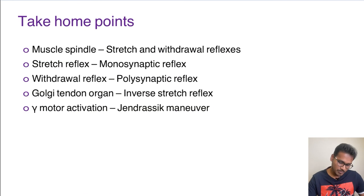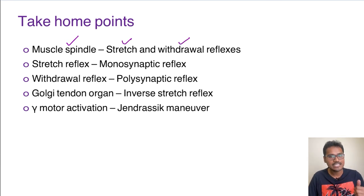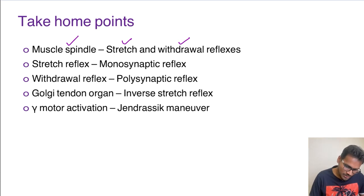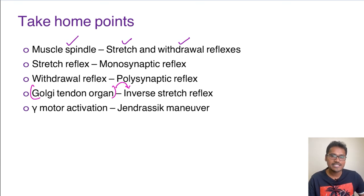Coming to the take-home points — the muscle spindle is responsible for both the stretch reflex and the withdrawal reflex. Stretch reflex is an example of a monosynaptic reflex, whereas withdrawal reflex is an example of a polysynaptic reflex. The Golgi tendon organ is responsible for the inverse stretch reflex. The gamma motor neuron discharge forms the basis of the Jendrassik maneuver. Please revise this topic — thank you for listening, and I hope to see you in the next video. Please subscribe and share with your friends.